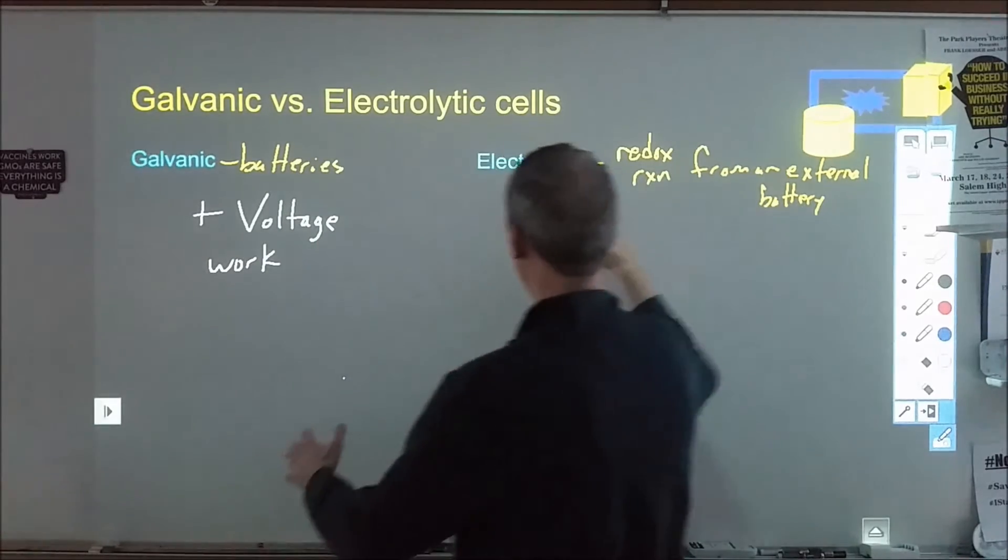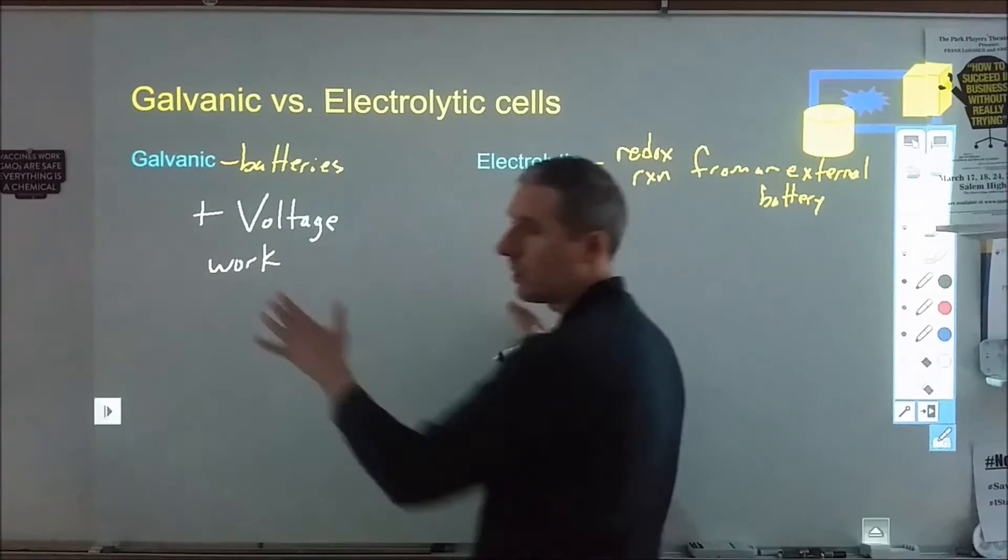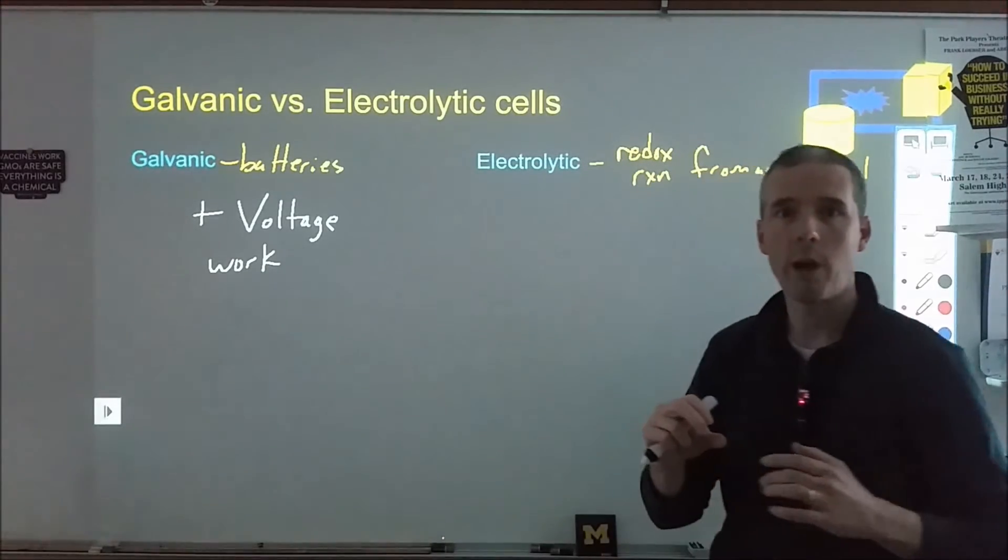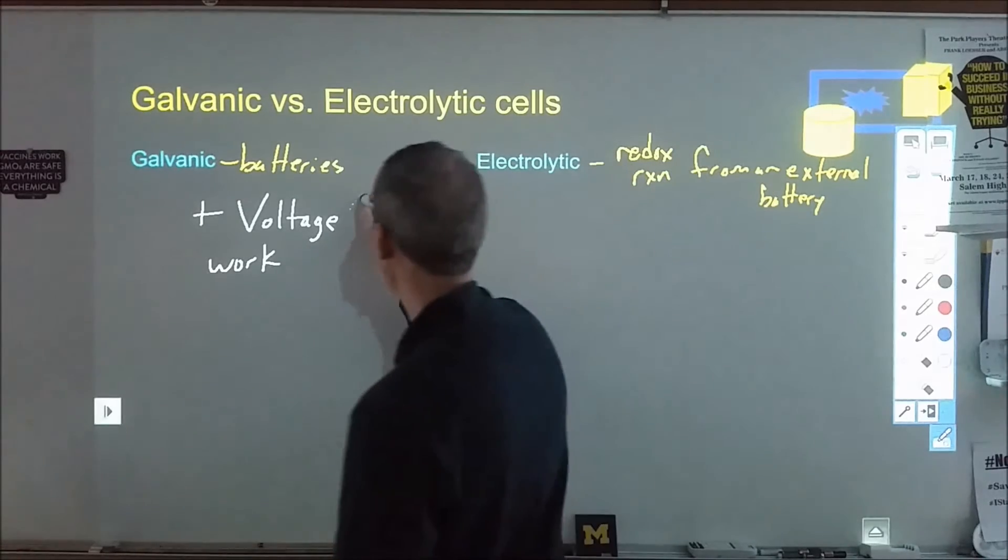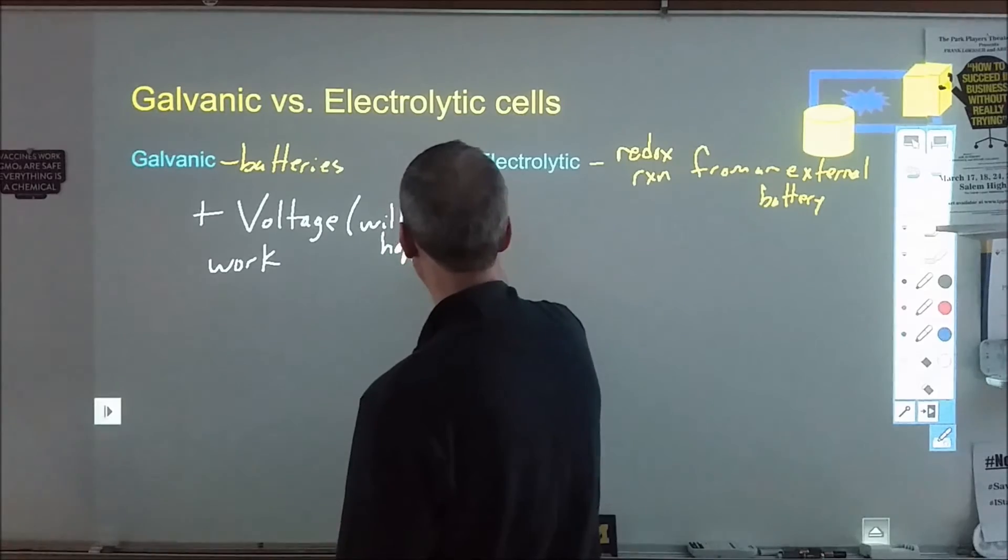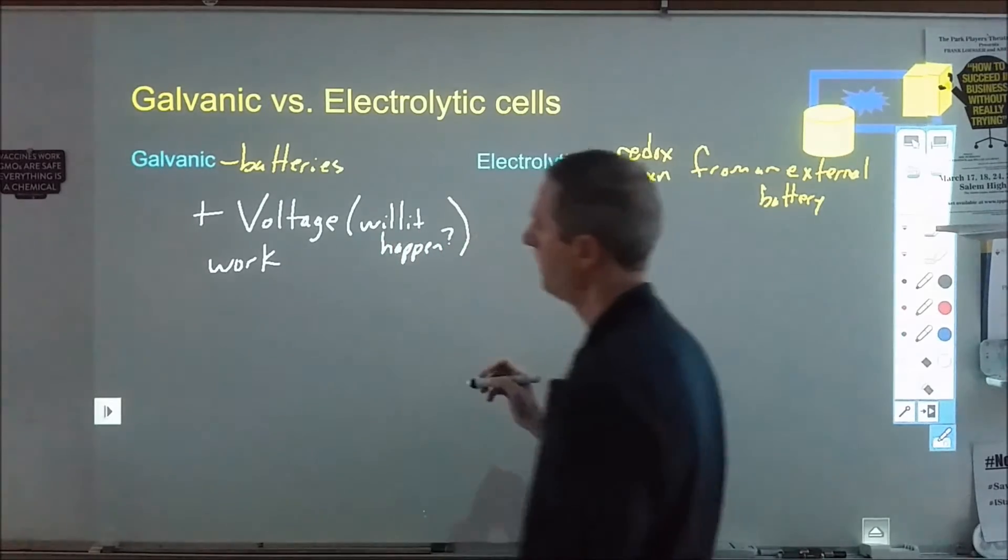In that case usually we're looking at two possible reactions and looking at which one gives us the positive voltage, which one will cause it to work. This still works with what we were defining in electrolytic. A positive voltage is going to give us something where we're looking at a case where this will happen. So again, voltage is will it happen? If the voltage comes out to the negative, then that's not going to happen.